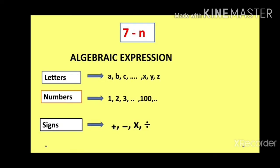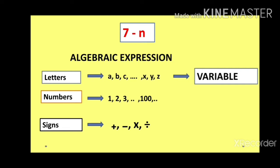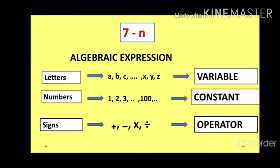Letters are used for variables. Variables are denoted by letters. What is a variable? A variable is that which does not have a fixed value. As you have seen, n can be 1, 2, 3, 4, 5, 6 — anything on the Ludo die. Numbers are the constants — constants mean which is fixed. The number 7 is fixed because when you add the two opposite sides, you always get 7. So 7 is the constant and n is the variable. Here the operator is minus, so subtraction is the operation.